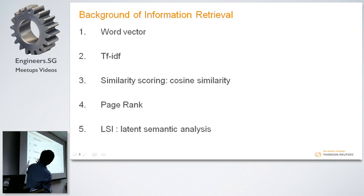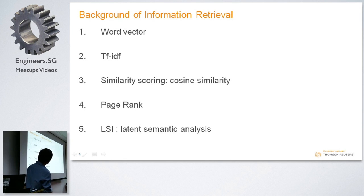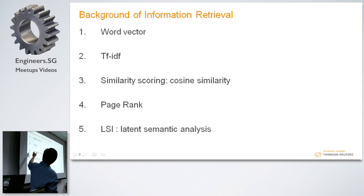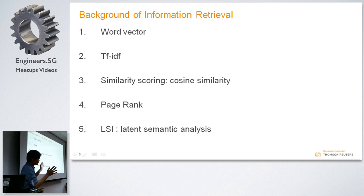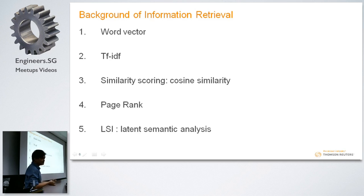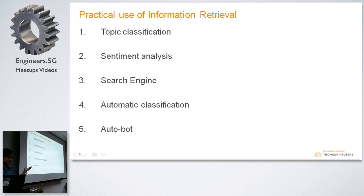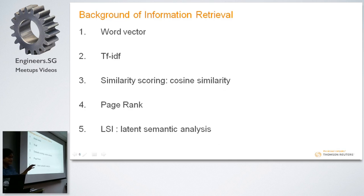What are the techniques used in information retrieval? We have word vectors, TF-IDF, similarity scoring, cosine similarity, PageRank, and LSI. TF-IDF stands for term frequency–inverse document frequency. These all work on the principle of having a word vector, which they call features in computer science. Then you do machine learning over it, identify cosine similarity, and use it for topic classification or NLP sentiment analysis. Latent semantic analysis uses a generative probabilistic model to classify a document according to a certain topic — maybe 50% political and 30% sports — using a latent distribution.